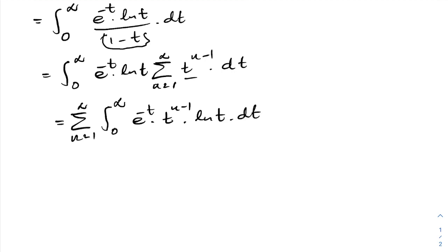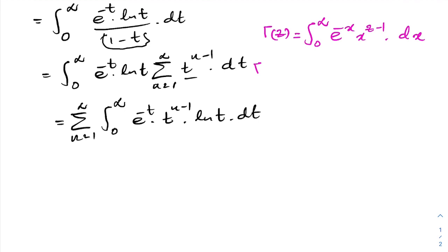I'll recall the definition of the gamma function: Γ(c) = integral from 0 to infinity of e^(-x) · x^(c-1) dx. Differentiating both sides with respect to c gives Γ'(c) = integral from 0 to infinity of e^(-x) · x^(c-1) · ln(x) dx.